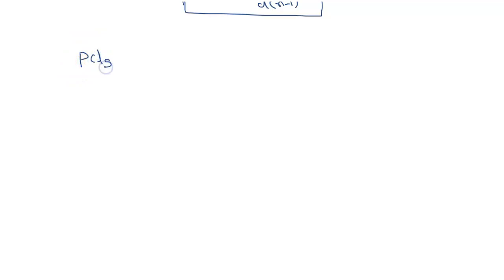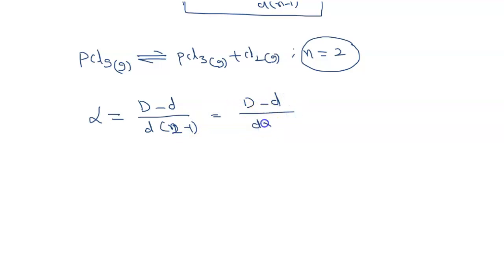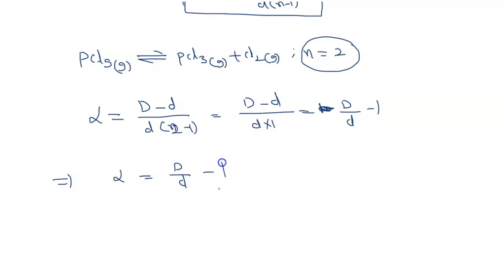Let us consider one example: PCl5 is in equilibrium with PCl3 gas plus Cl2 gas. Here the number of moles n equals 2, because one PCl5 molecule splits into 2 products. Then degree of dissociation alpha equals (capital D minus small d) divided by (small d times (2 minus 1)), which gives alpha equals (capital D minus small d) divided by small d, which equals D/d minus 1.